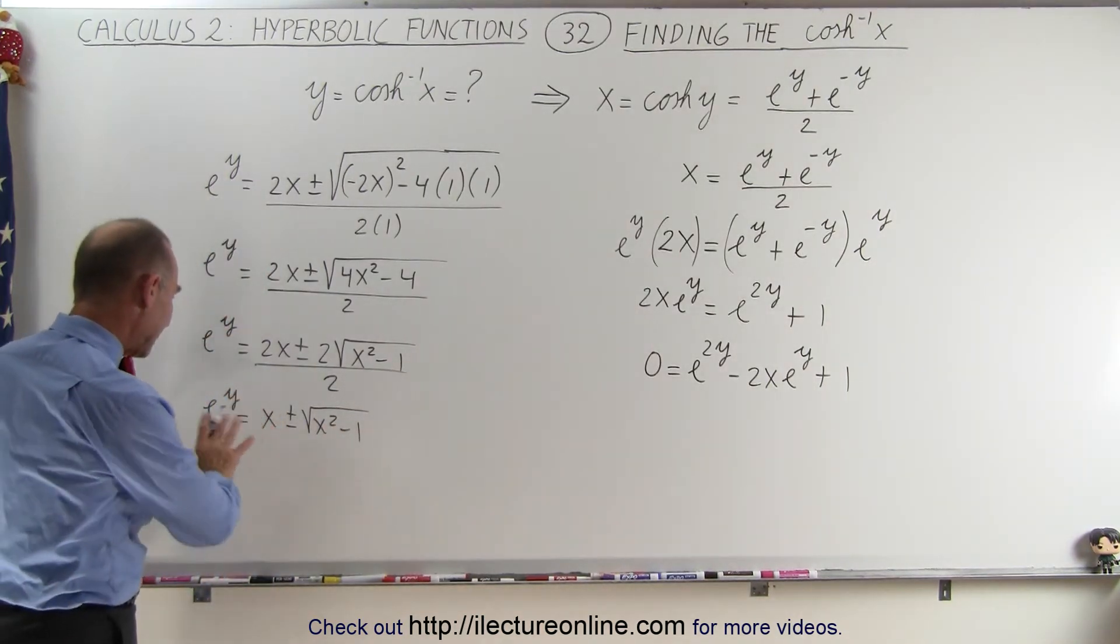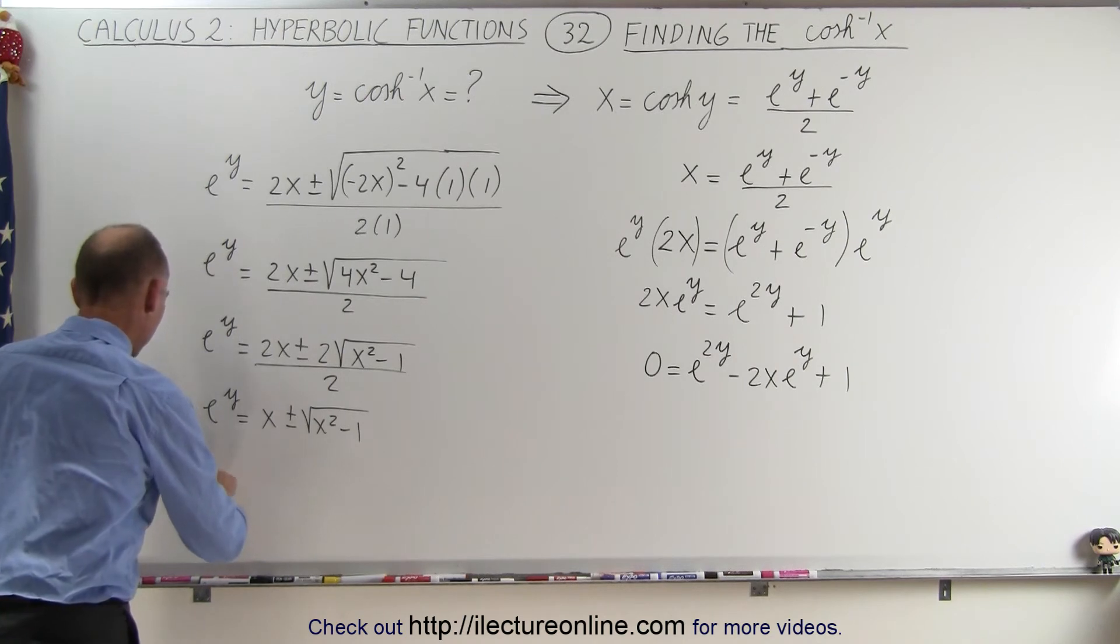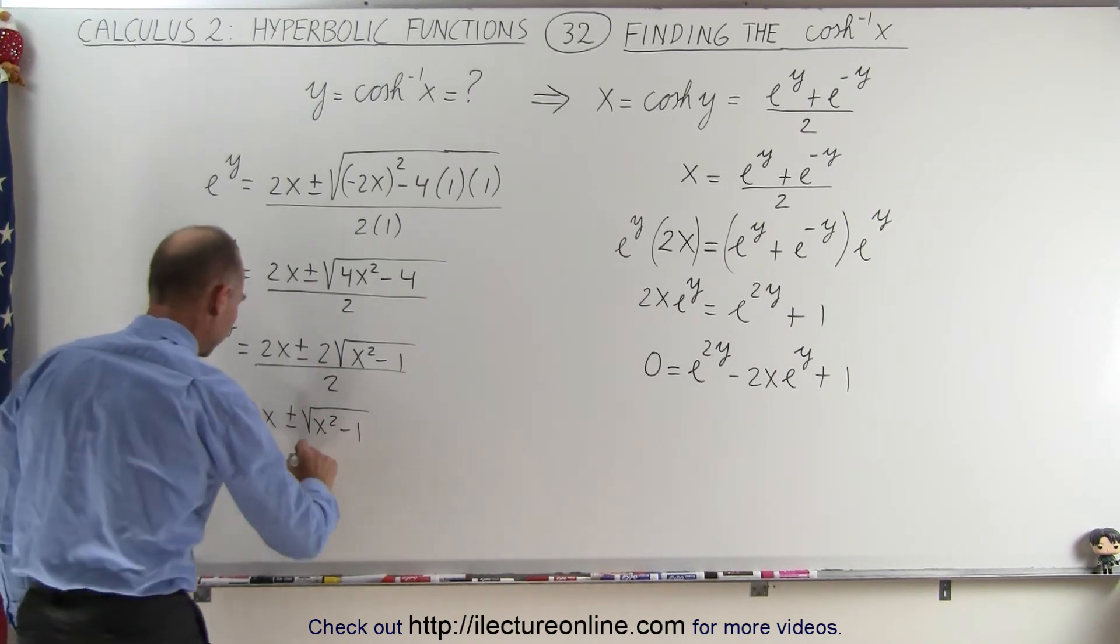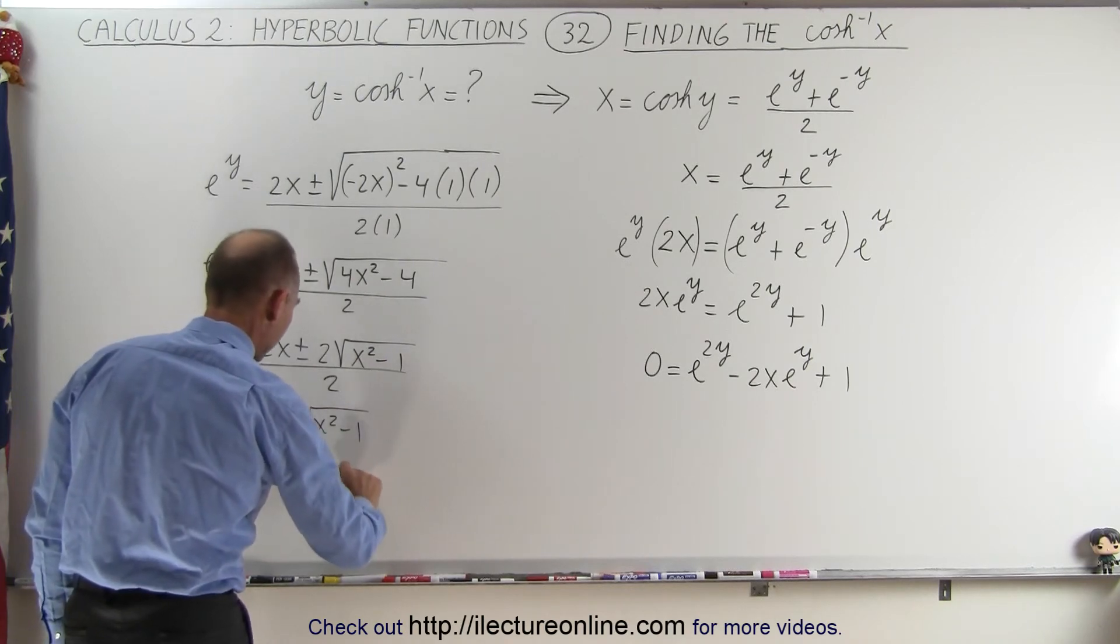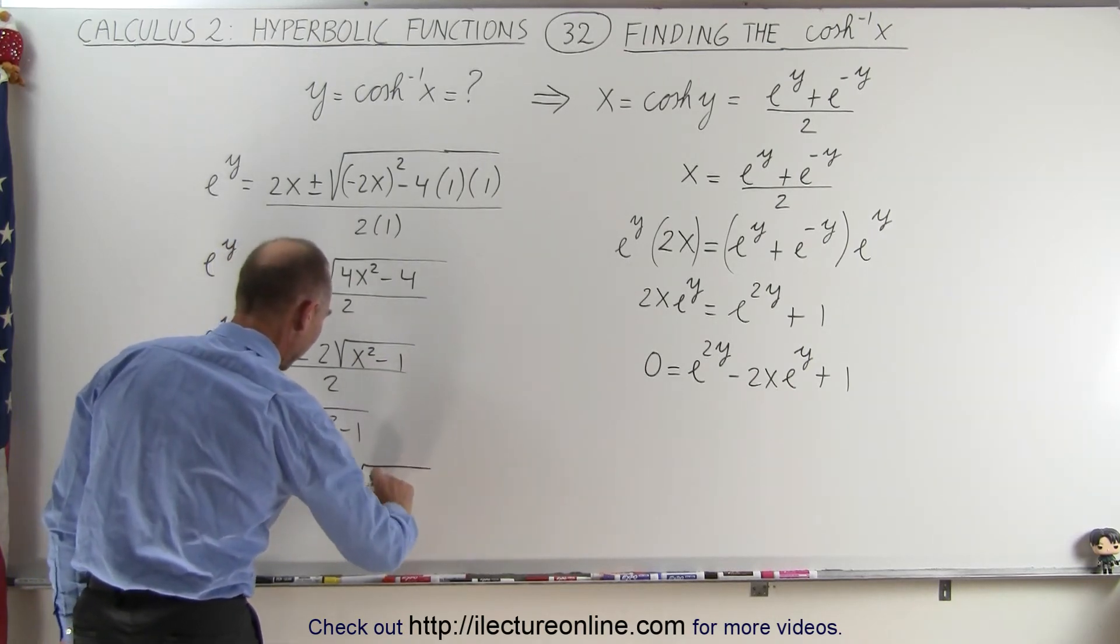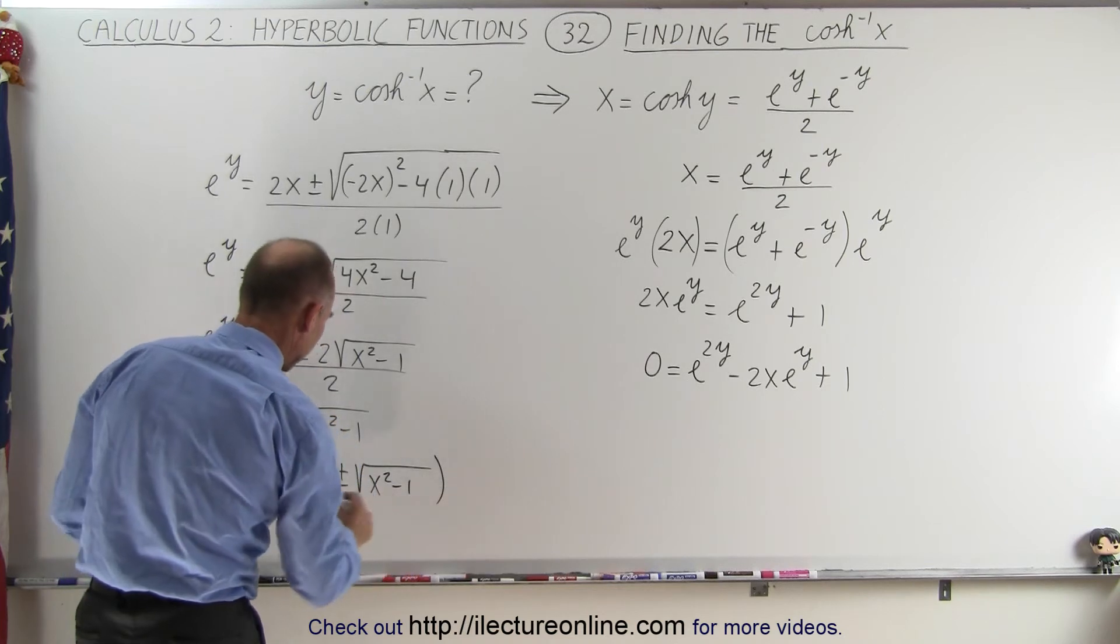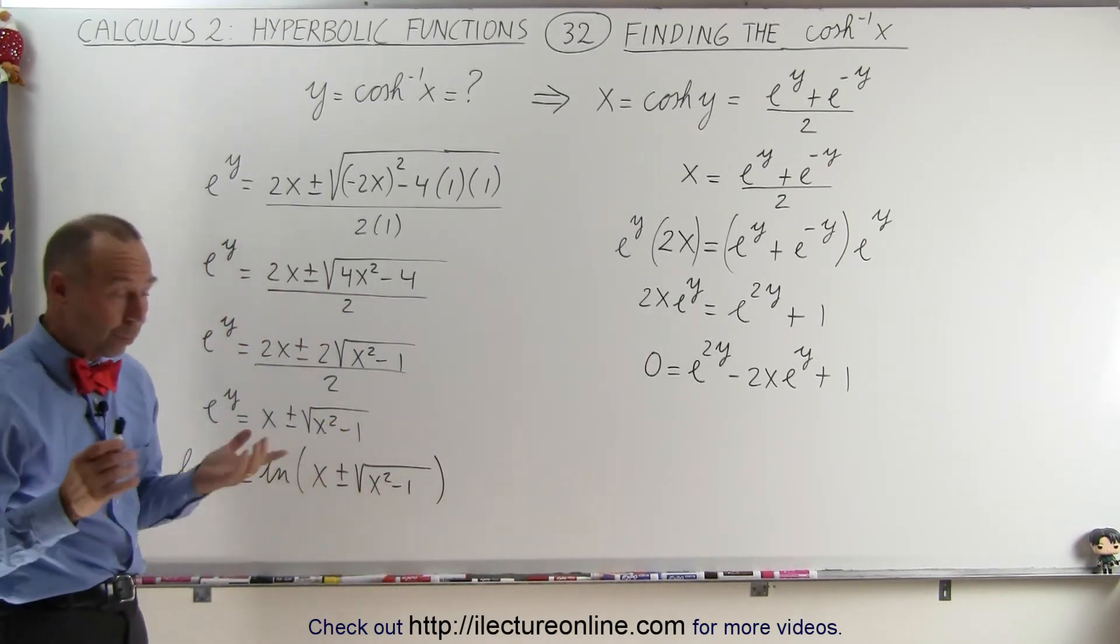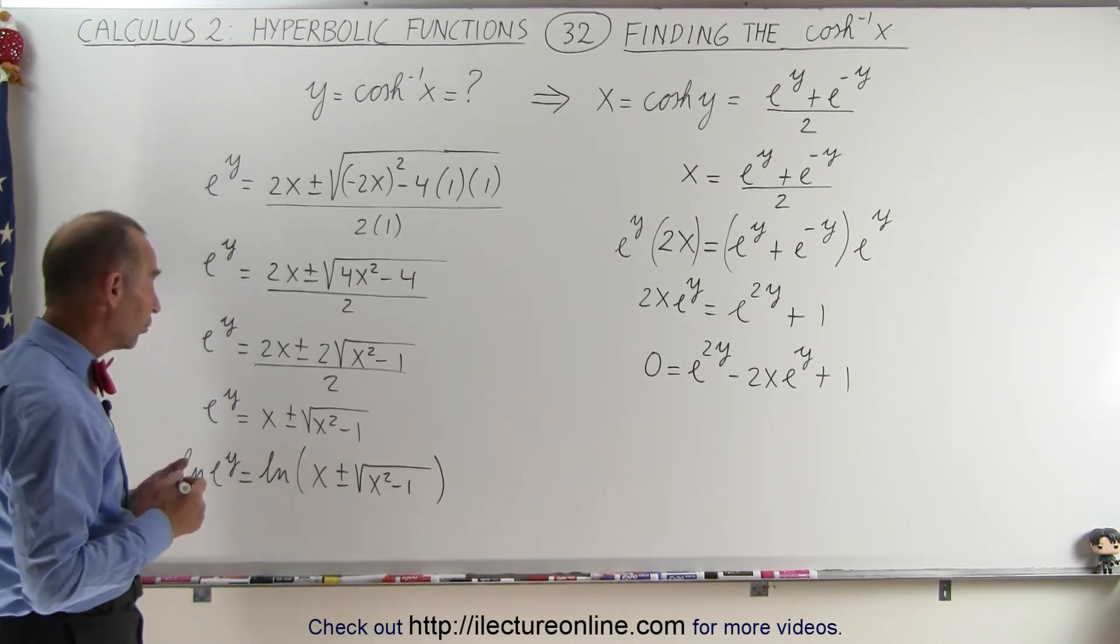Now when we take the natural log of both sides, we get the natural log of e to the y is equal to the natural log of x plus or minus the square root of x squared minus 1. Now here, let's take a look and see why we need plus or minus, or why we only need one of those two possible solutions.